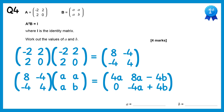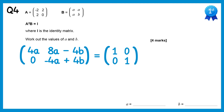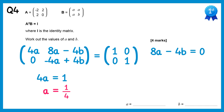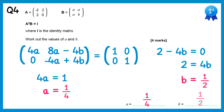We're told this equals I, the identity matrix. Comparing the top left: 4a equals 1, so a equals one quarter. Looking at the top right: 8a take 4b equals 0. Since a is one quarter, 8 times one quarter is 2, so 2 take 4b equals 0. Adding 4b to both sides gives 2 equals 4b, and dividing by 4 gives b equals one half. So the answers are a equals one quarter and b equals one half.